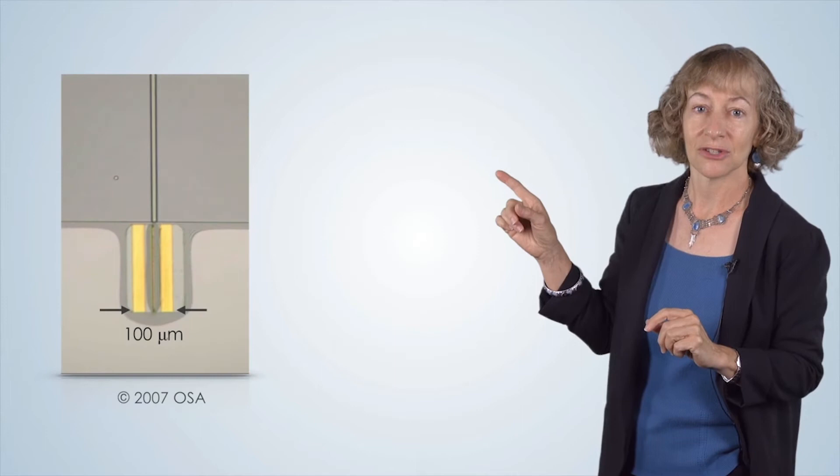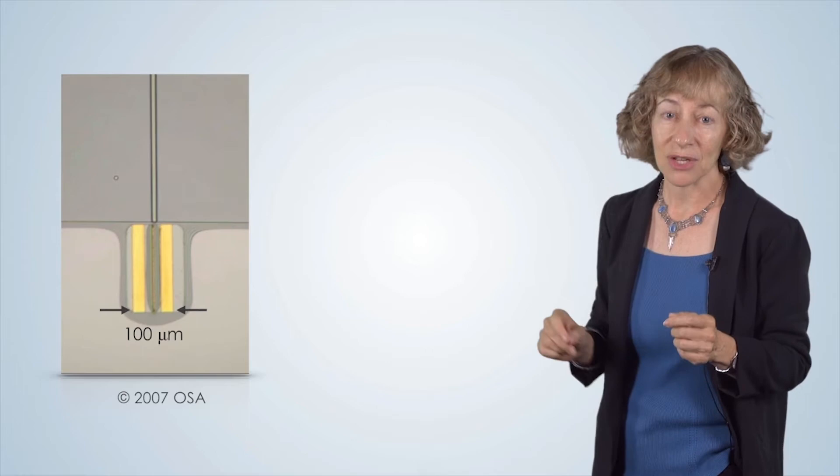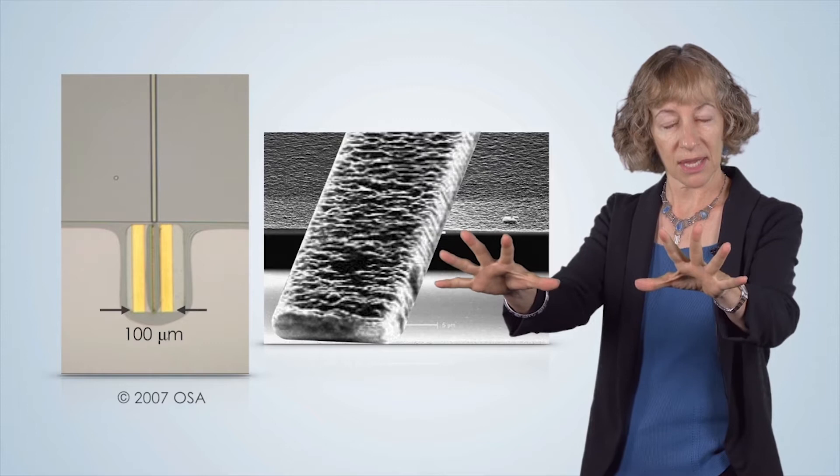Here's a tiny semiconductor laser that my students made here at Duke in the facilities you'll learn about. This laser can fit onto the head of a pin easily. The scanning electron microscope picture of this laser shows the metal stripe that pumps electrical current into the laser to produce the output light.